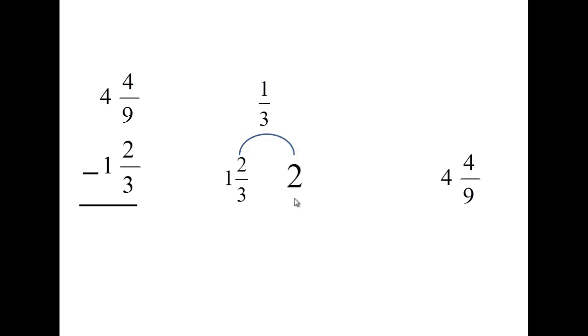Counting by 3rds, you would only need 1 more, because 1 3rd and 2 3rds, that makes a hole. And then you have another hole right there, so 1 and 1 makes 2. We'll do some bigger jumps. From 2 to 3, that's a hole. From 3 to 4, that's another hole.